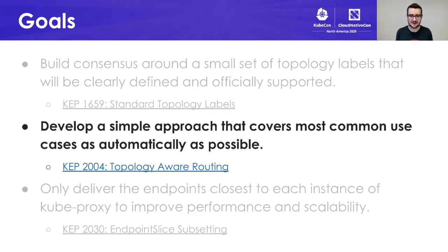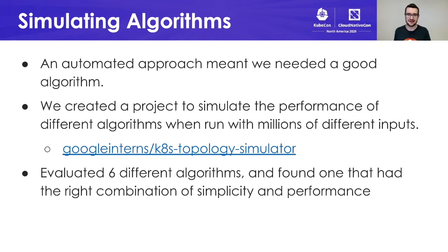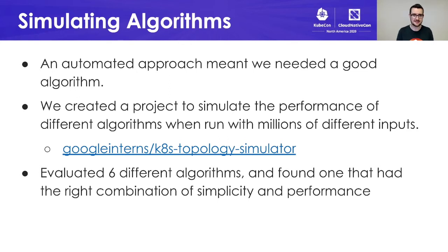Our second goal was likely the most significant one: to develop a simple approach that covers the most common use cases as automatically as possible. An automated approach meant we needed a good algorithm — but not just a good algorithm, a good way of evaluating lots of potential algorithms so we could actually understand what a good algorithm was. And so Rick Chen, an awesome Google intern, developed an open source tool called Kubernetes Topology Simulator. This allowed us to plug in any number of algorithms and run them against millions of inputs to see just how well or poorly they performed.